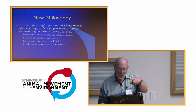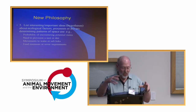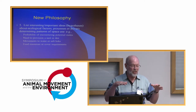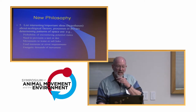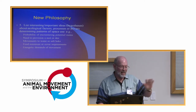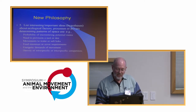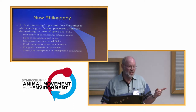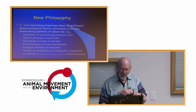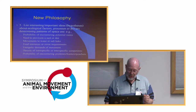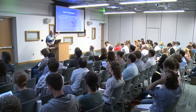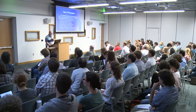What about movements to water or salt licks? We ought to know where those are and incorporate them. What about food resources or cover requirements? We can have coverages describing those and incorporate them into our analysis of space use. What about energetic demands — rhinos can't climb steep hills, so slopes may be important. What about density of intraspecific or interspecific competitors? For rhinos, the density of females and competing males. And finally, the probability of encountering predators, hunters, or poachers. These are all factors we should analyze. We have the methods to do it.